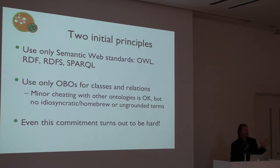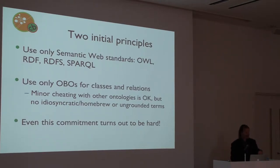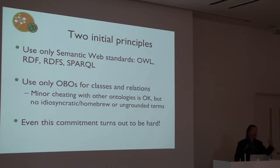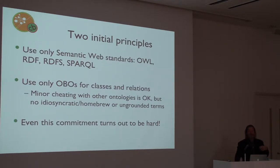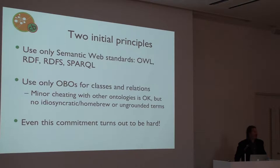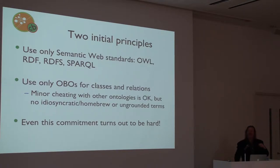I want to start off with two initial principles that I hope are uncontroversial. The first one is that we should use semantic web standards — the technology developed broadly across many communities to represent and manipulate meaning in computational form. Those standards include things like OWL, the web ontology language, RDF and RDFS, and SPARQL as a query interface. Certainly by looking at the activities of the last few days, at least in this community, these are uncontroversial. I could also add the open annotation framework as another one of these standards. It's not a global semantic web standard, but it's getting some traction and I think is worth adhering to.